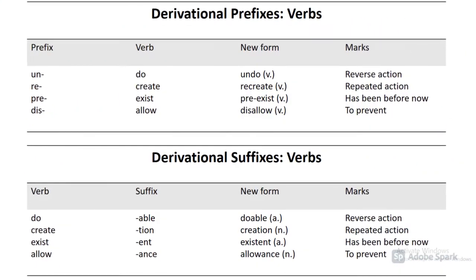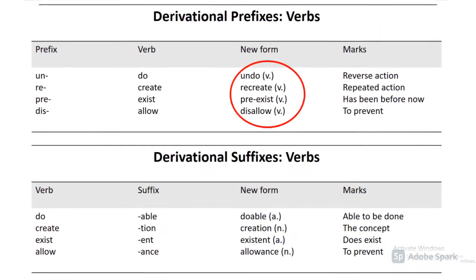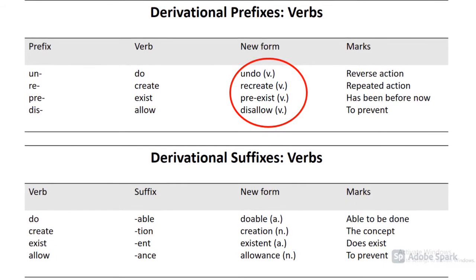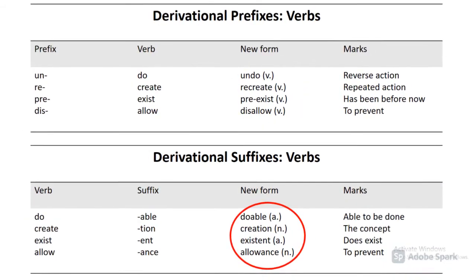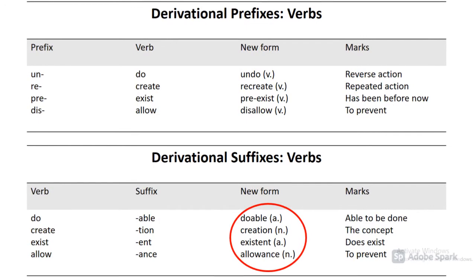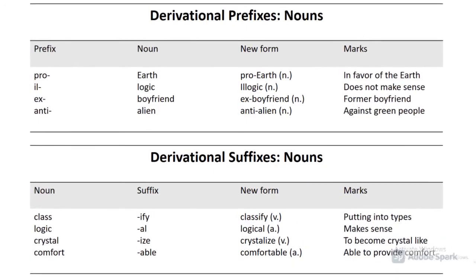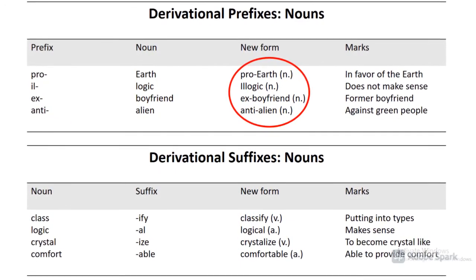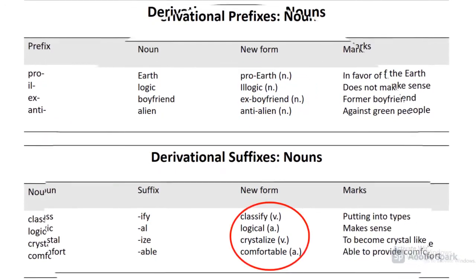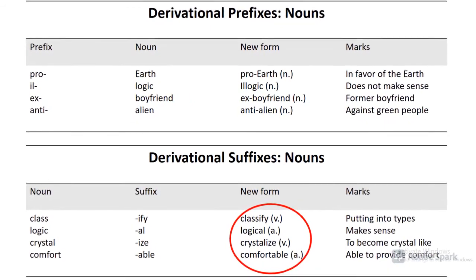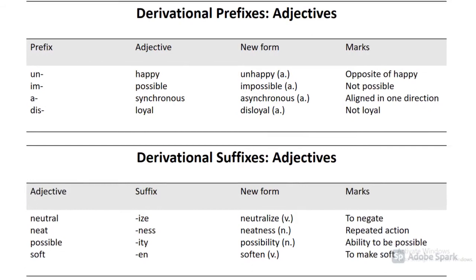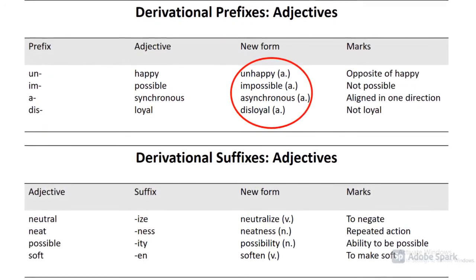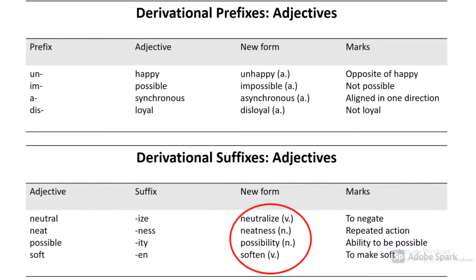Let's talk about derivational prefixes and suffixes for verbs. Notice that derivational prefixes don't change the category of verbs — rather, they modify the use of verbs. On the other hand, derivational suffixes change the category of verbs, making them either adjectives or nouns. Moving on to nouns, we can start to see a pattern: like verbs, prefixes do not change the categories of nouns, but suffixes will change the category of nouns. Finally, for adjectives, derivational prefixes don't change the category but rather the usage, and derivational suffixes change the categories.